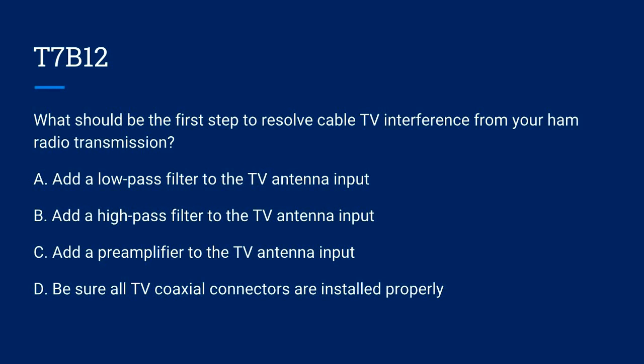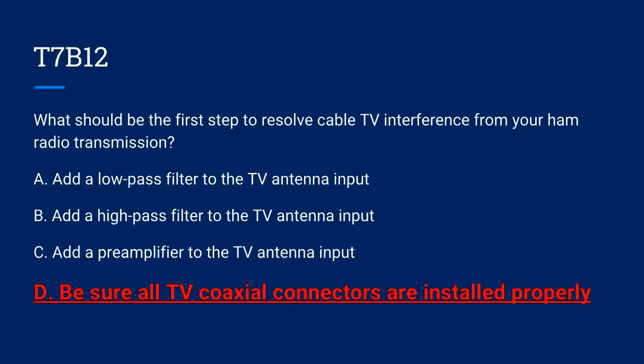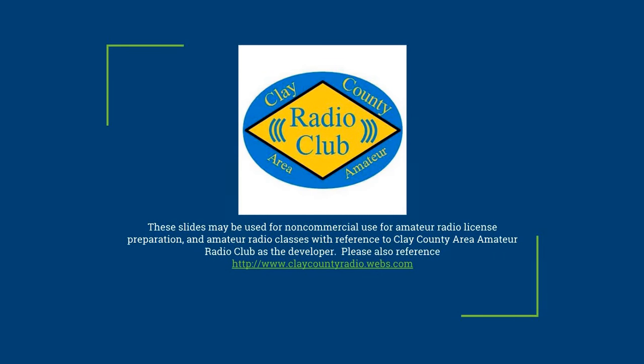T7B12. What should be the first step to resolve cable TV interference from your ham radio transmission? A. Add a low-pass filter to the TV antenna input. B. Add a high-pass filter to the TV antenna input. C. Add a preamplifier to the TV antenna input. Or D. Make sure all TV coaxial connections are installed properly. The correct answer is D. Be sure all TV coaxial connectors are installed properly.